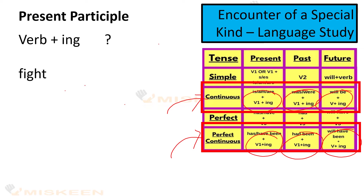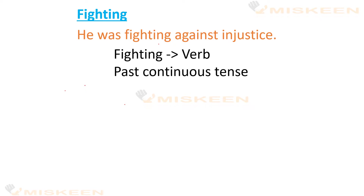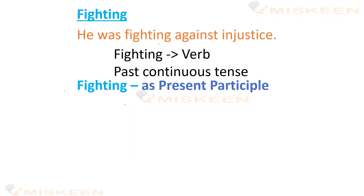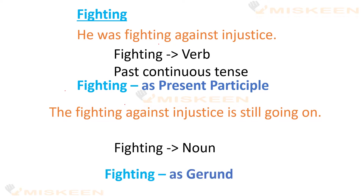Ab yehaan par haem is word ko leetahe hai — fight. Isme ing lagane se, yeh ban jata hai: fighting, yaani ladai. Ham dho istamal dhekhenge — as a present participle and as a gerund. He was fighting against injustice — yehaan par fighting ek verb hai, past continuous tense mein, ek present participle ka kaam kar raha hai. Doosera jumla: the fighting against injustice is still going on — yehaan par fighting ek noun ka kaam kar raha hai, aur is liyeh yeh ek gerund hai.